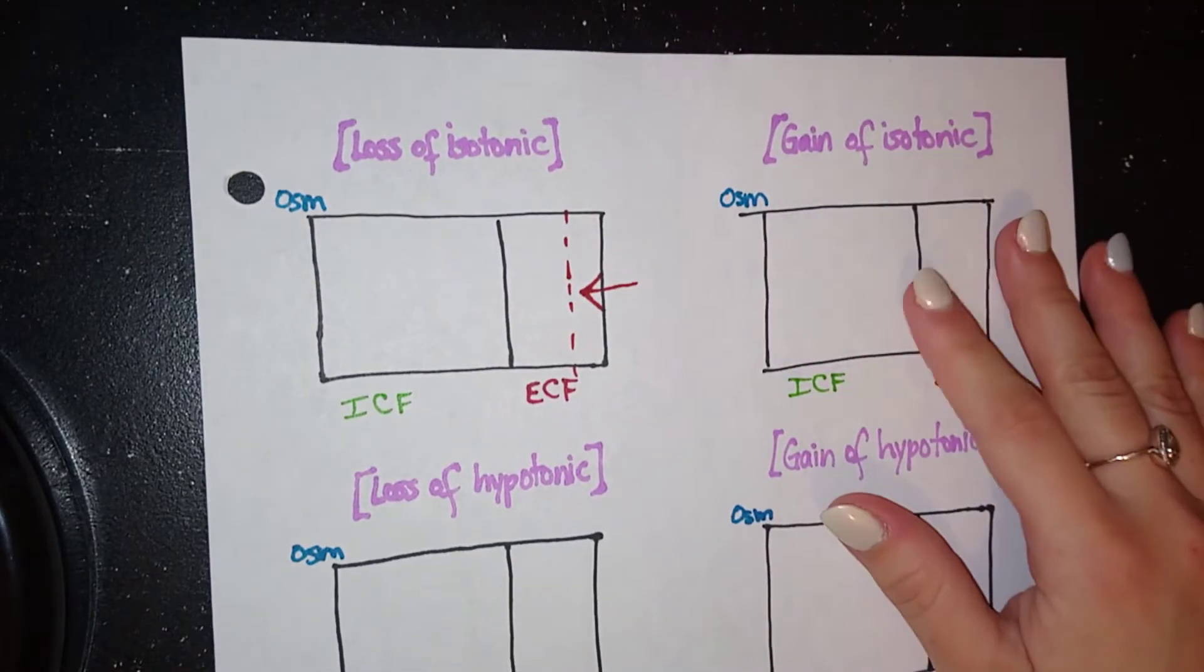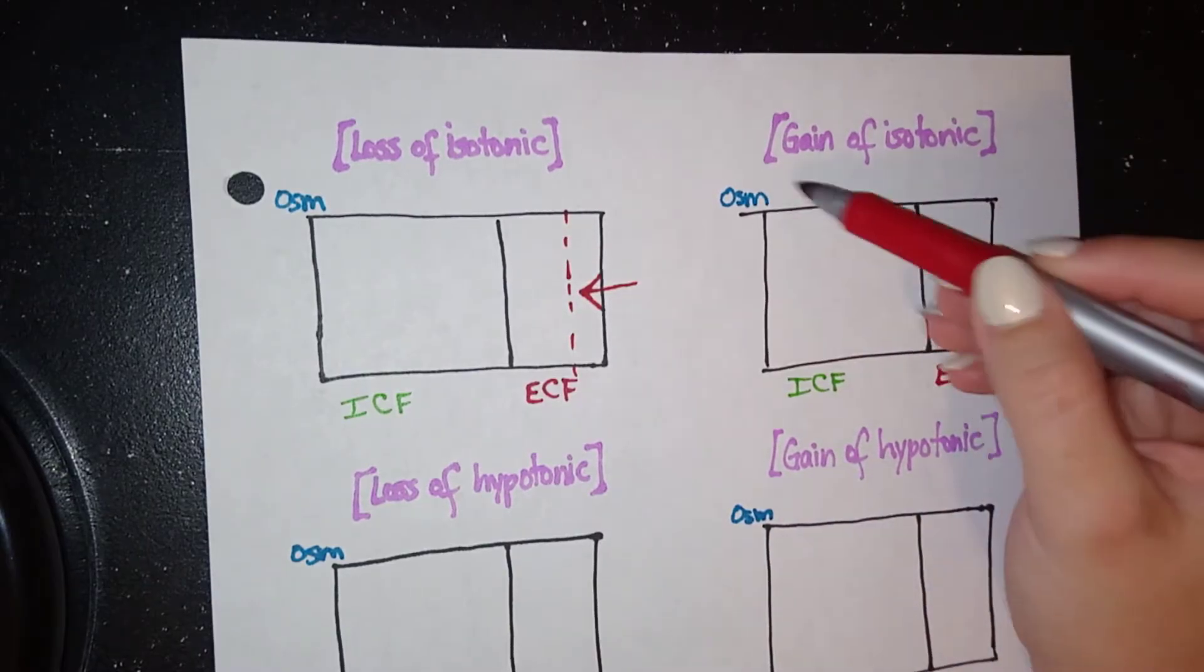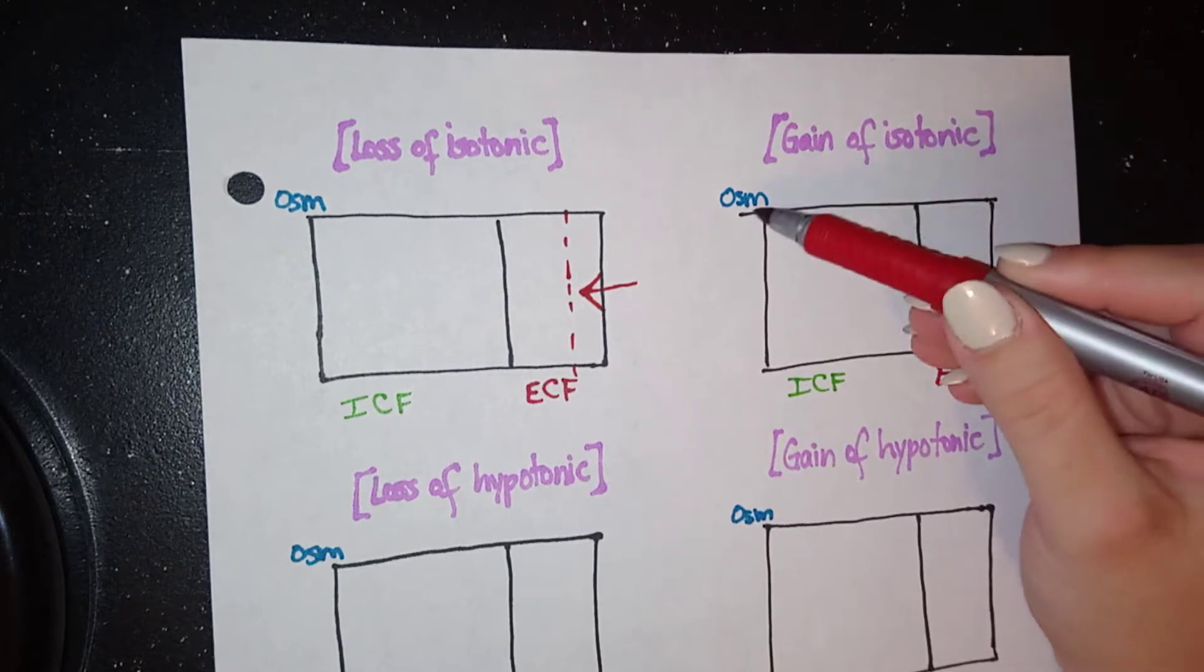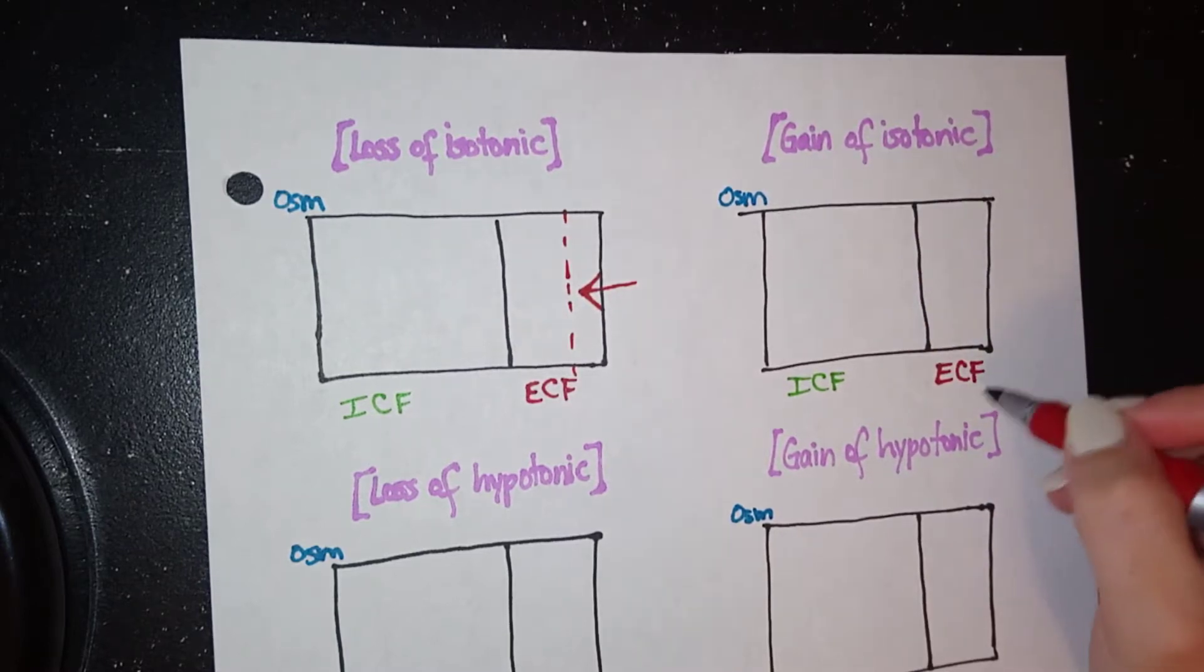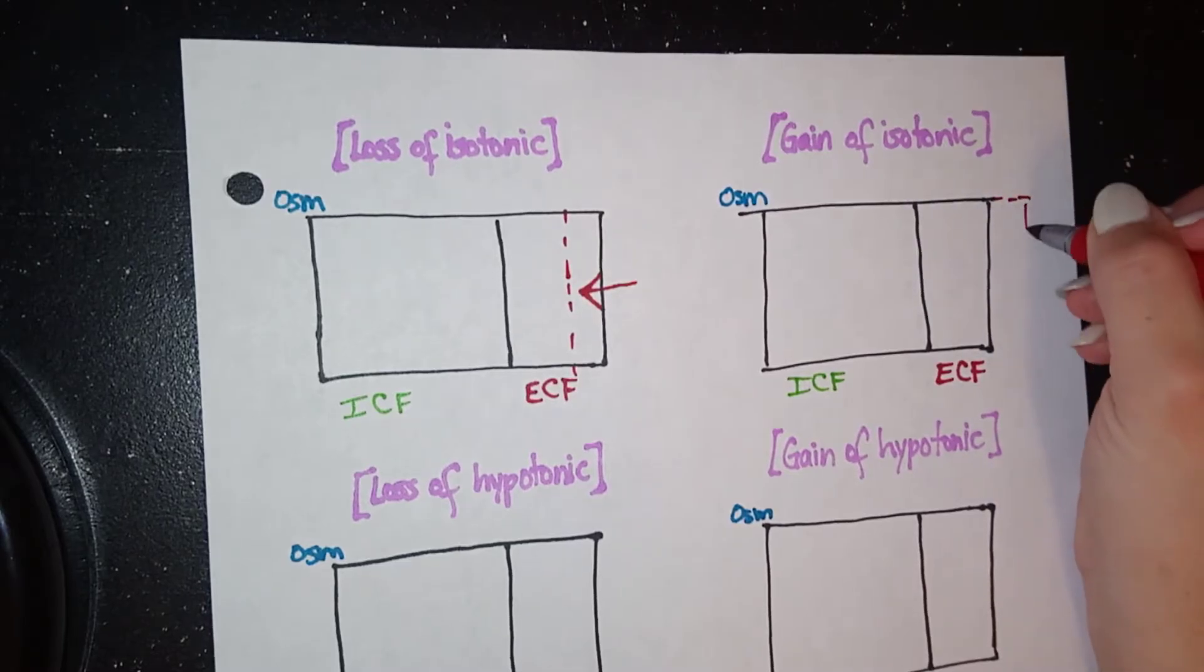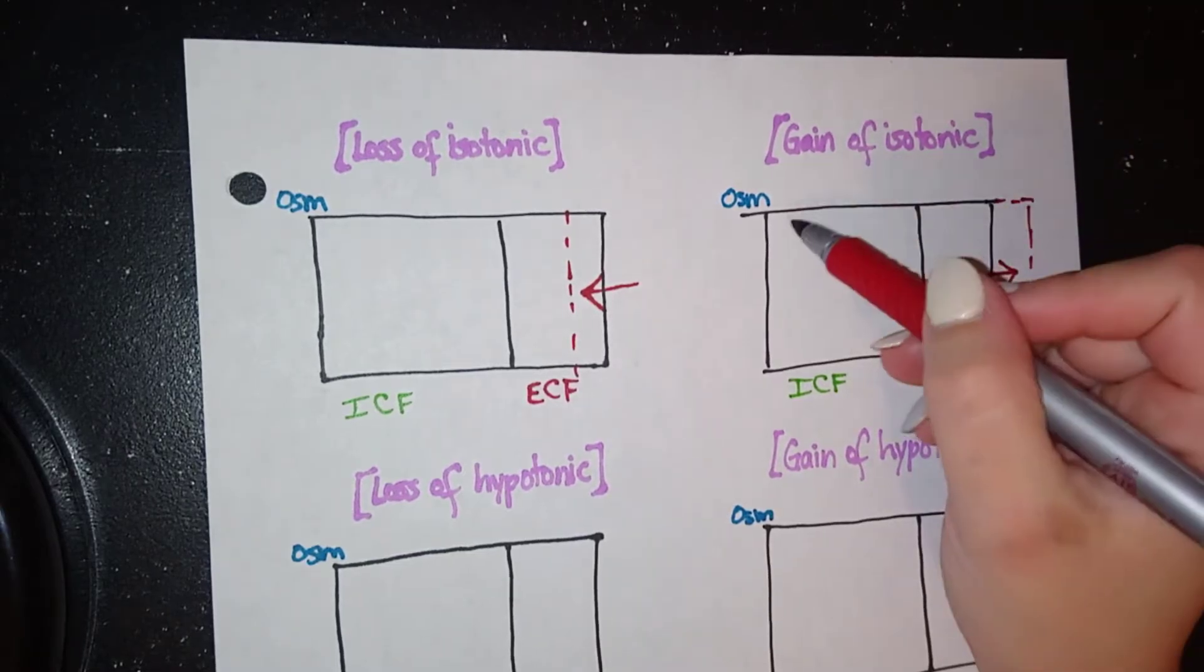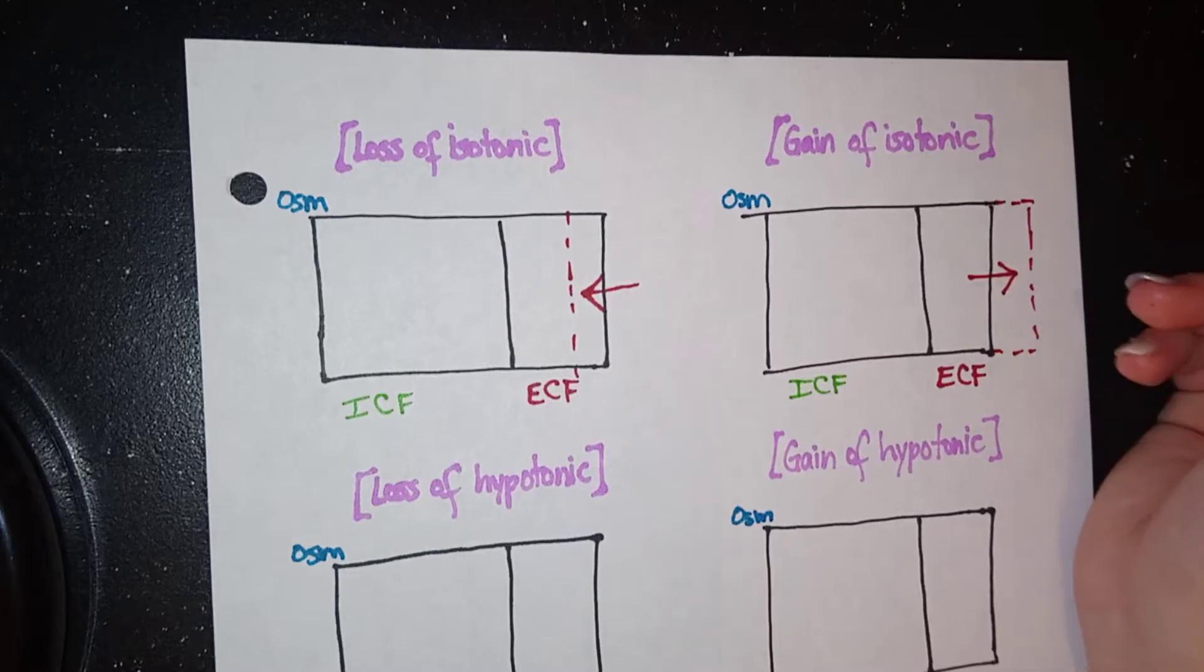Now, as expected, if we gain isotonic fluid, it will be the same case. Osmolarity will stay the same. That's my step one. And then my step two is to look at ECF. ECF here will increase because we have added fluid that is isotonic. There's no change in osmolarity.